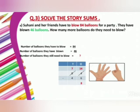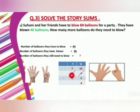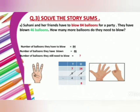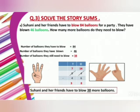Now we are going to do tens. So 7 minus 4 — open your 7 fingers, close 4 fingers. How many are left? 3. So 7 minus 4, your answer is 3. So number of balloons they still need to blow — your answer is 38. Suhani and her friends have to blow 38 more balloons.